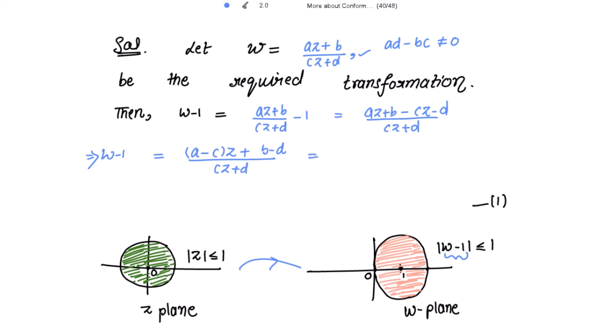Now take (a - c), the coefficient of z, common from the numerator and c, the coefficient of z, common from the denominator. We get w - 1 = [(a - c)/c] · [z + (b - d)/(a - c)] / [z + d/c]. Please mark this as equation 1.